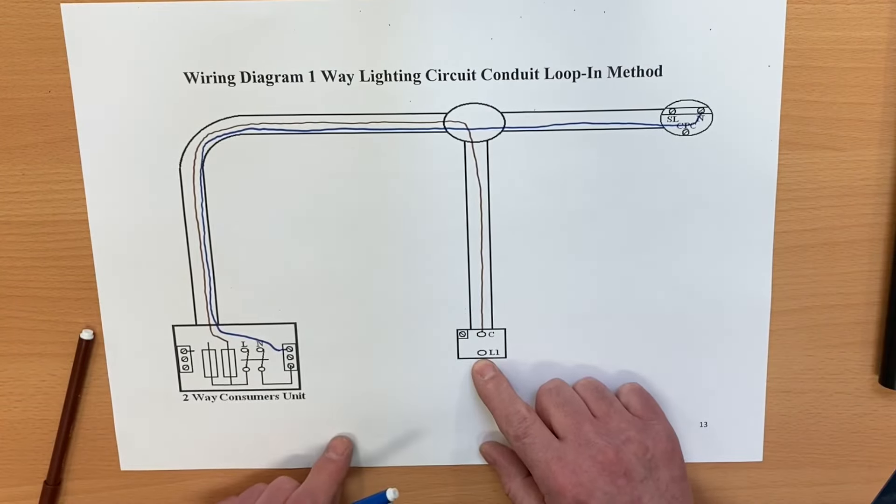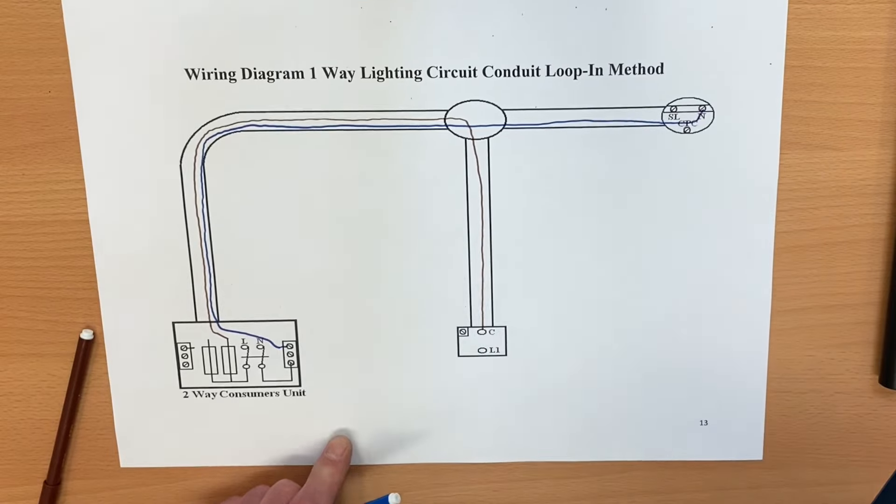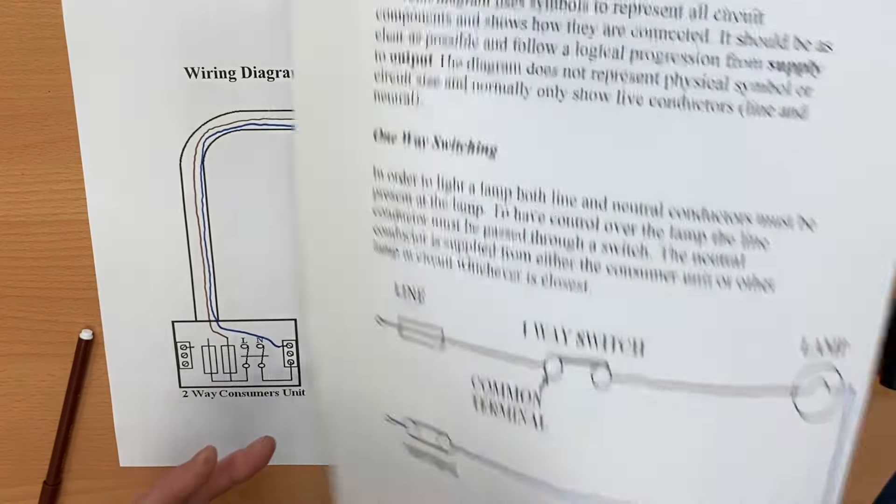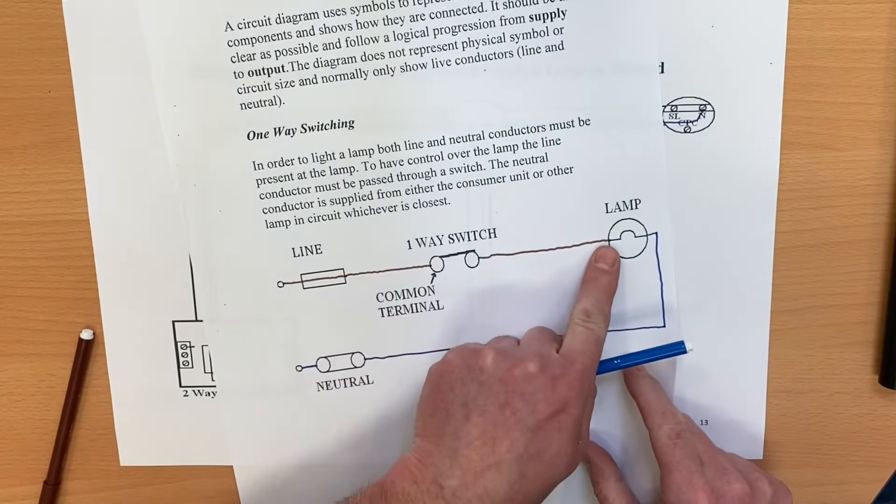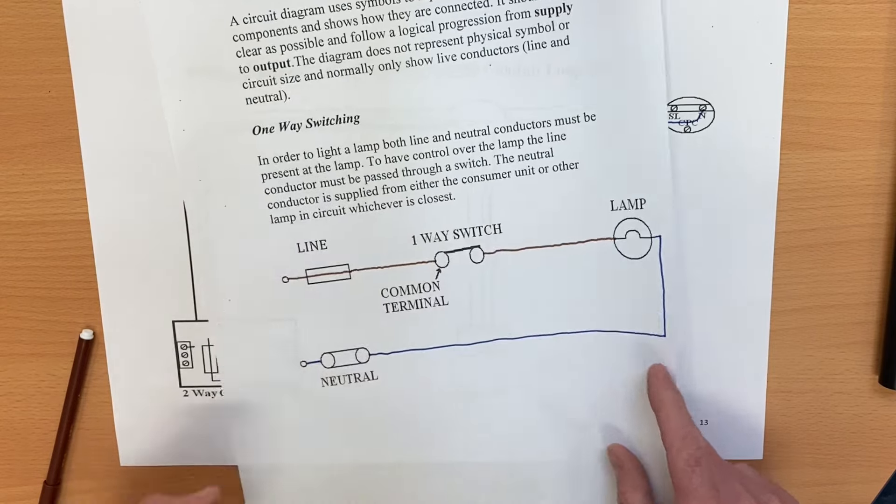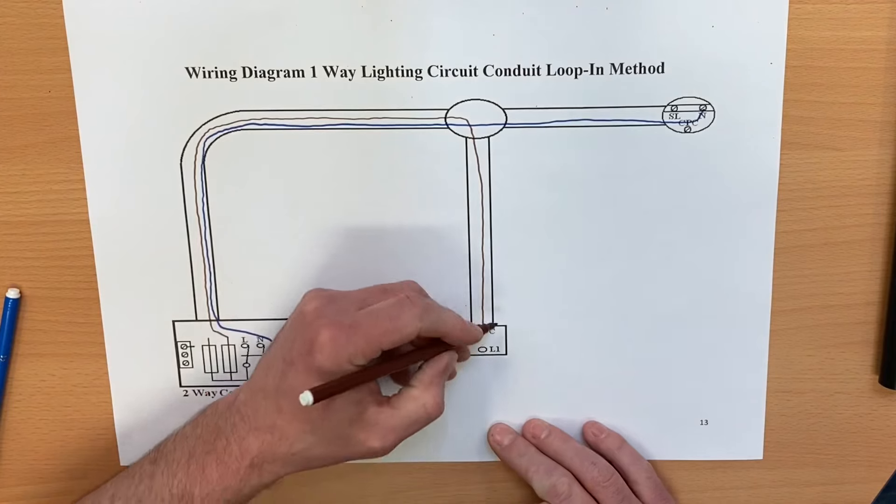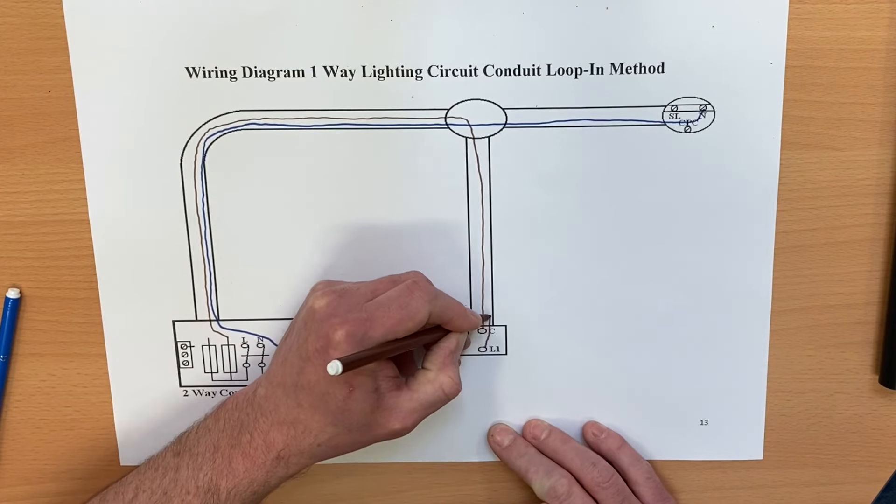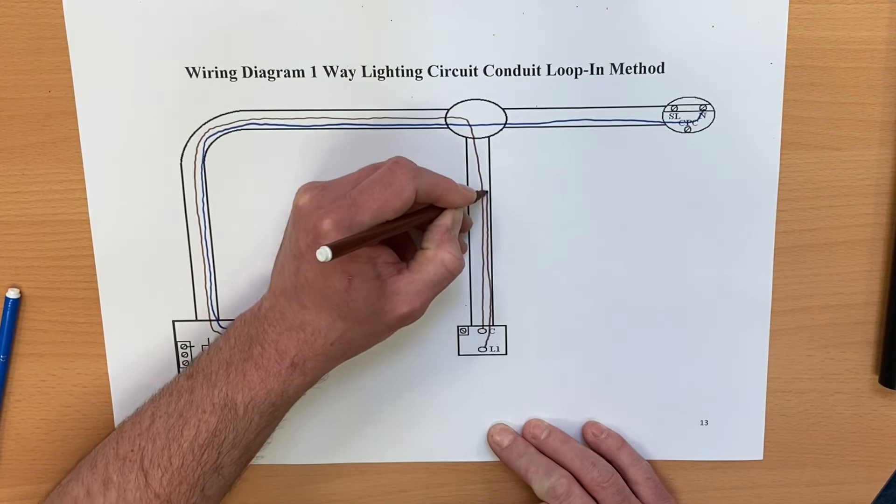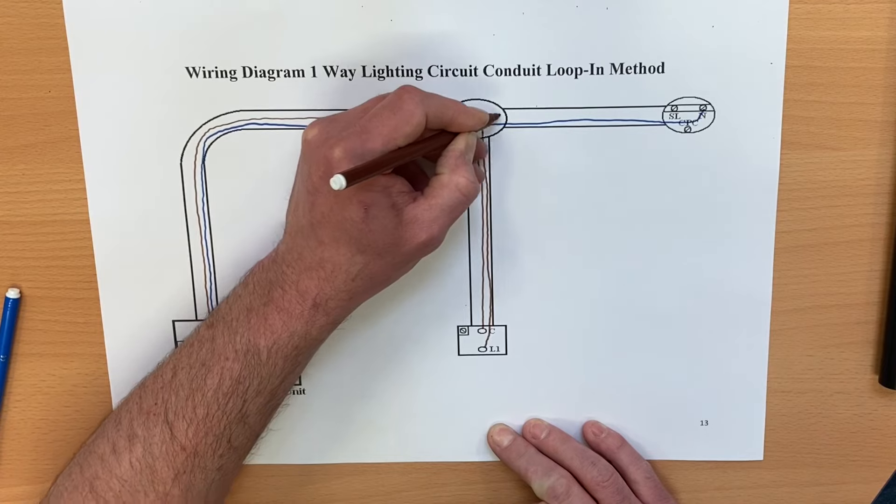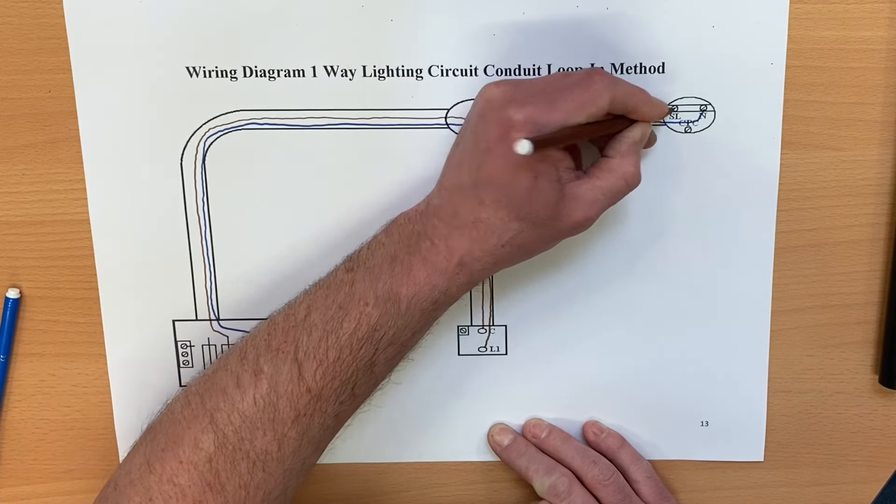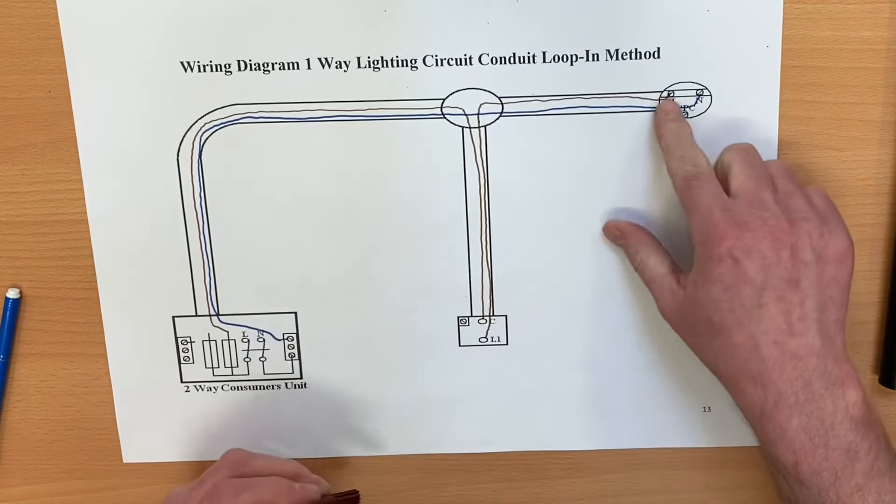We need a switching line from here going directly to the light. So from L1 directly to our light itself, and then we can look at putting our CPCs in as well. So we come out of L1 and I'm going to bring that through the conduit system in singles, and I'm going to bring it into my switching line conductor of my lamp. There's only three terminals up here.